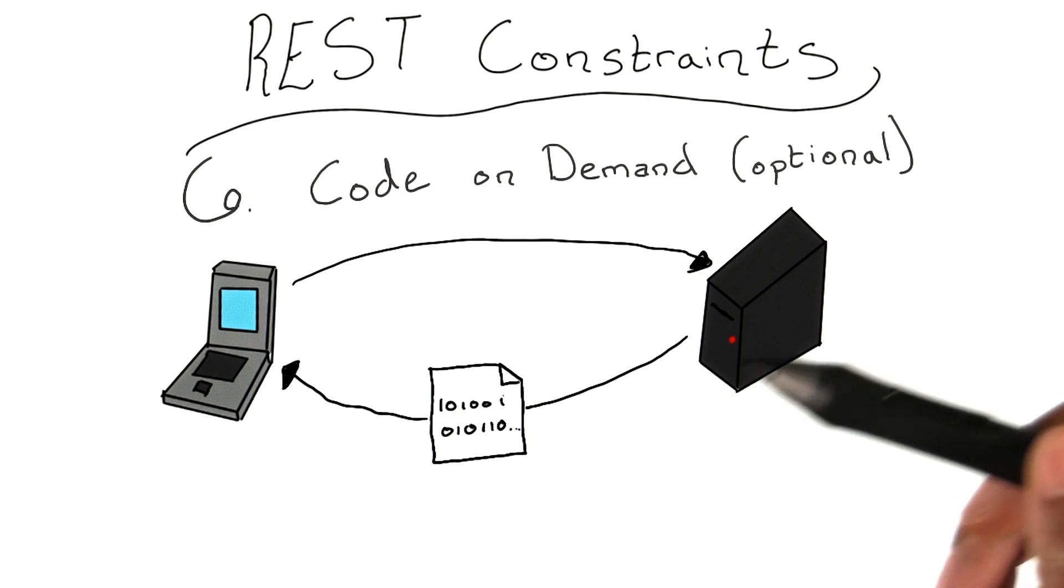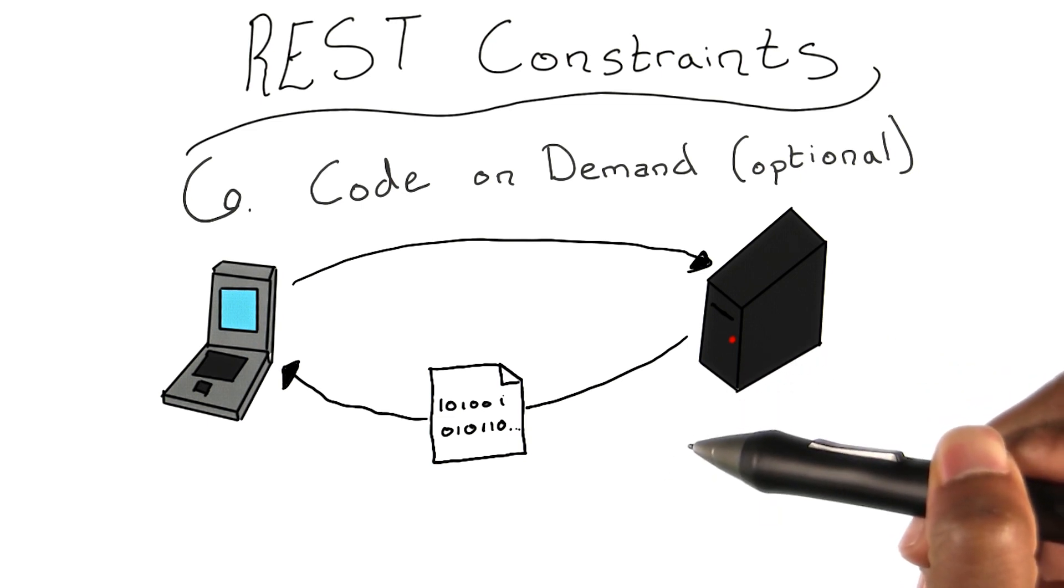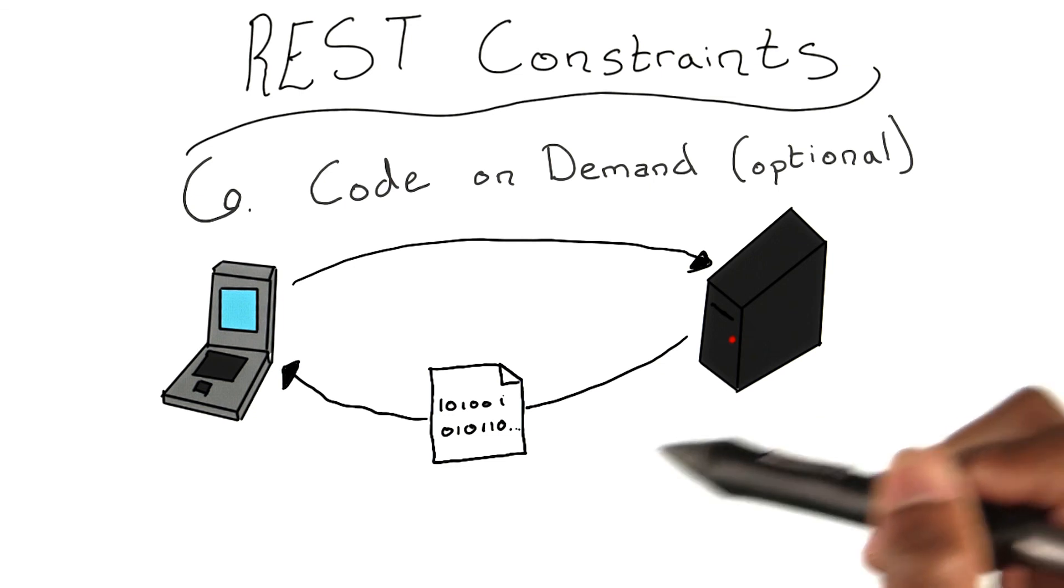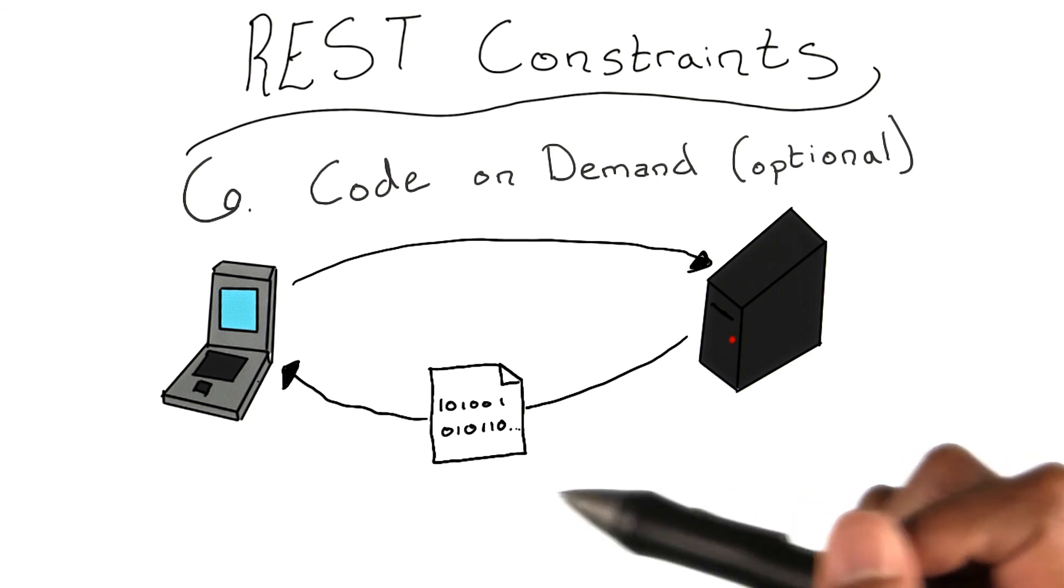Code on demand is an optional constraint for RESTful applications, but it opens the possibility for code, like JavaScript for example, from the server to be sent off to the client for execution. For more about the RESTful constraints, feel free to check out some of the links I provided in the instructor notes.